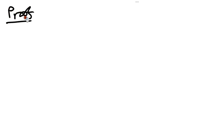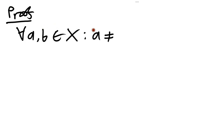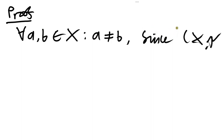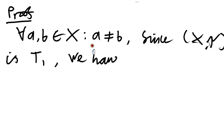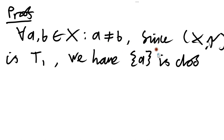What's the proof of this result? Well, we're going to assume that our topological space is T1, and now let's suppose that we have a pair of distinct points a and b. Since the space is T1, we're going to have that the set which just contains a has to be closed.